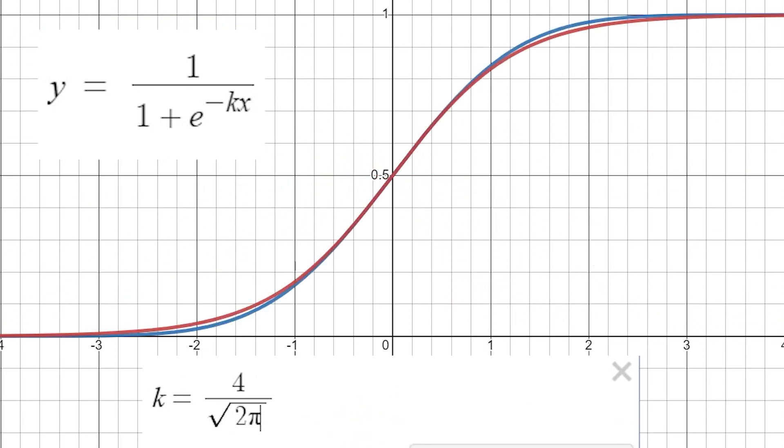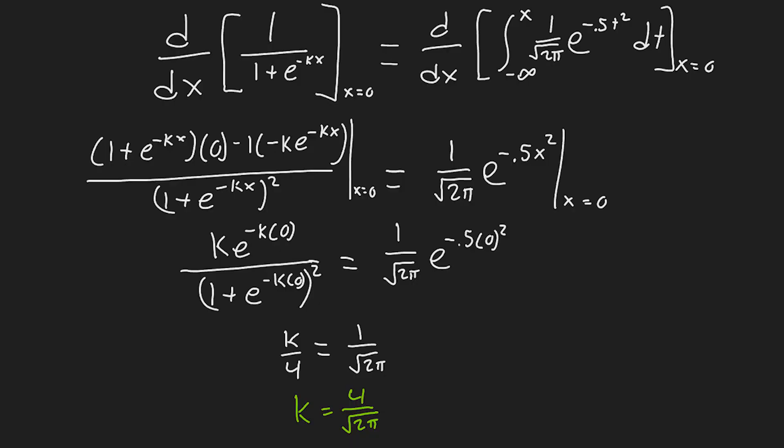Now it's a game of trying to find the best value k. And spoiler alert, it's 4 divided by the square root of 2π. At least I'm very confident it is. If you were wondering where I got this mystery number, I took the derivative of our sigmoid and set it equal to the derivative of our CDF evaluated at 0. All right, there's just one more thing we need to do.